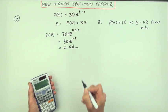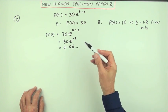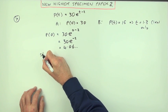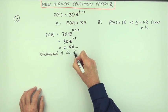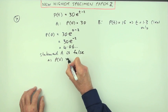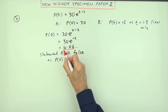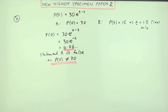But I have to give a reason, the reason is so I have to make a statement. Statement A is false as P(0) is not equal to 30. There's the justification, there's your statement.